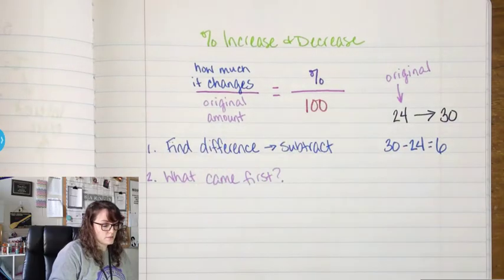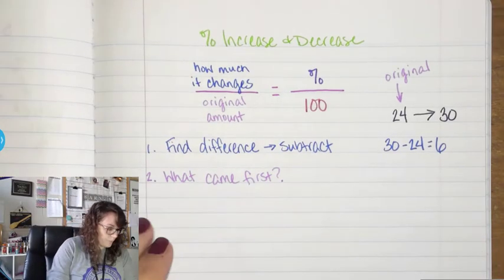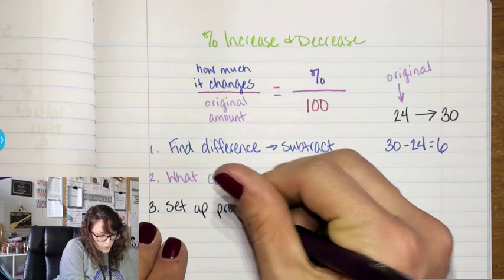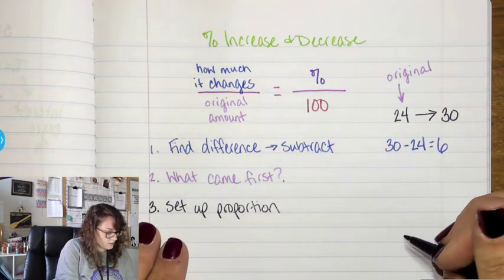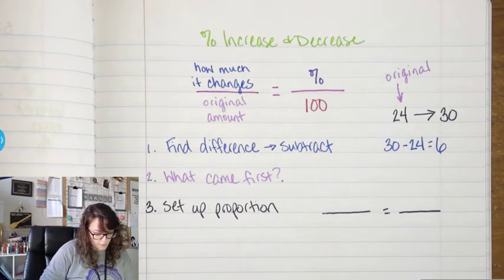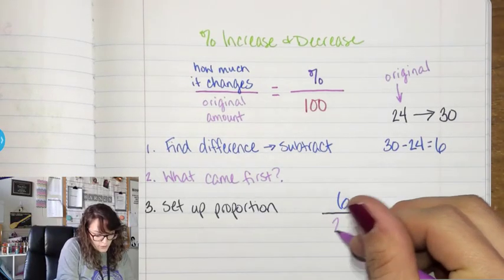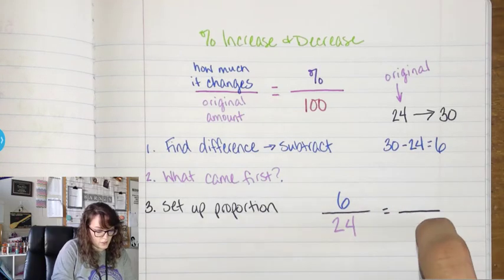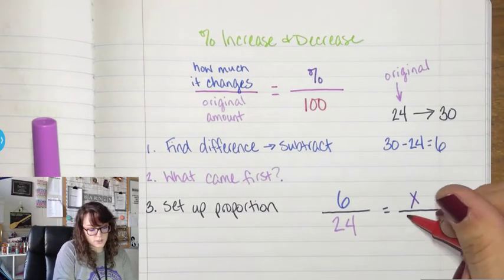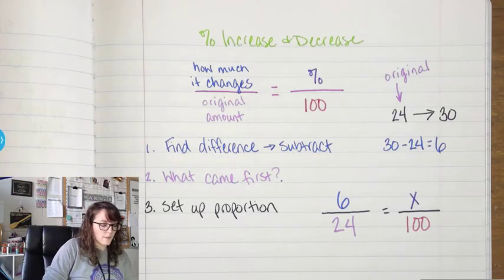So that 24 is going to go in the bottom left. Step three: we're going to set up our proportion — plug in what we know. How much it changed goes here, that's 6. How much was it goes here, that's 24. And then I have x over 100 — x because I don't know the percent, and this is always 100.